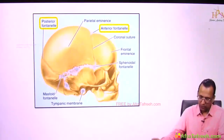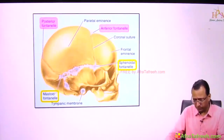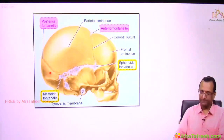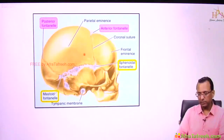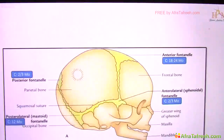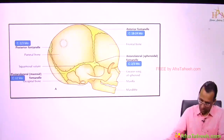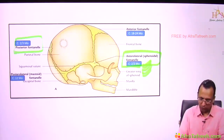The anterior fontanel is between the frontal bone and the parietal bone. The posterior fontanel is between the occipital bone and parietal bone. The mastoid fontanel is where the temporal bone meets the occipital and parietal bone, and the sphenoidal fontanel is where the temporal bone meets the parietal as well as the frontal. The first fontanels to fuse are the sphenoidal anterolateral fontanel and the posterior fontanel, both closing at two to three months after birth.